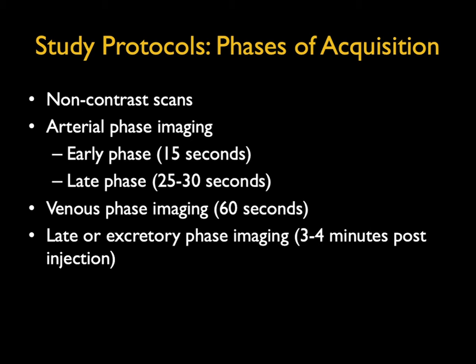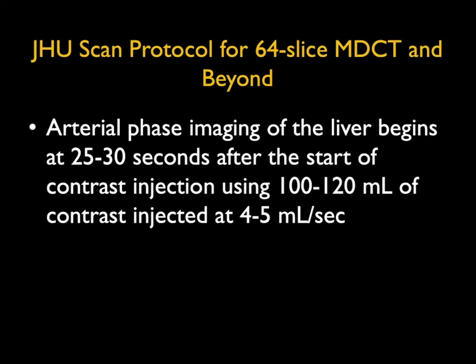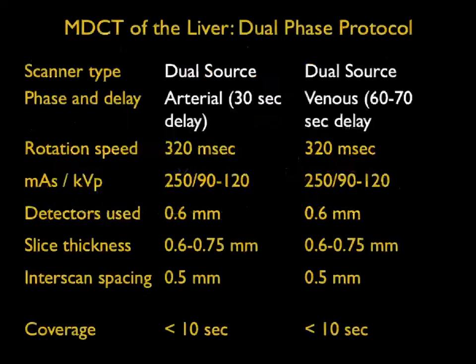It's rare for us to get delayed phase imaging. Occasionally people mention that if you're worried about a cholangiocarcinoma or trying to classify a mass a little bit better, but for parenchymal liver disease in general it's not necessary. For contrast, we'd like to inject 5 cc's a second, around 100 to 120 ml depending on patient size, and we use thin section CT.